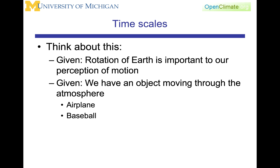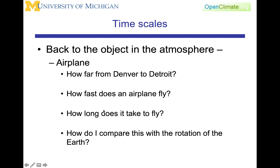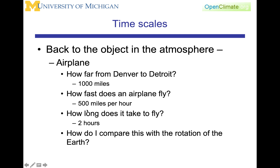I want to think about this in terms of objects moving through the atmosphere. Given that the rotation of the Earth is important to our perception of motion, we will consider an airplane and a baseball. For the airplane, consider: how far is it from Denver to Detroit? How fast does a plane fly? How long does it take? In an order of magnitude argument, it's about 1,000 miles from Denver to Detroit, a plane flies at about 500 miles per hour, so it takes about two hours. There is some combination of variables we are going to use to get a time scale to compare to F-naught.